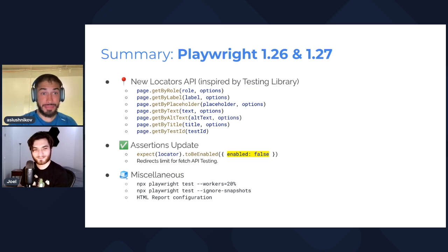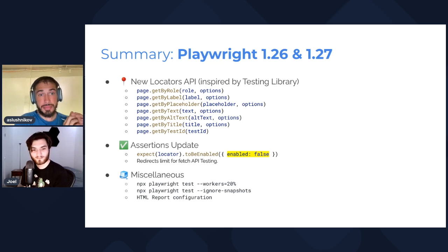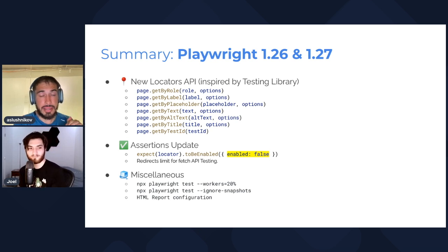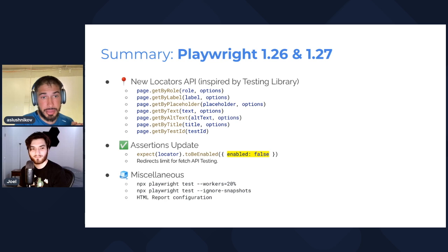To summarize: we have the new Locators API — the new preferred way to select elements on page. We have the assertions update with programmatically friendlier toBeEnabled, toBeEditable, and toBeVisible, plus max redirects for API testing. And we have miscellaneous Playwright Test improvements: the workers percentage value, ignoreSnapshots, and better HTML report server bind configuration.